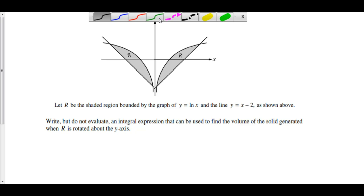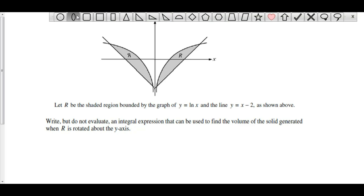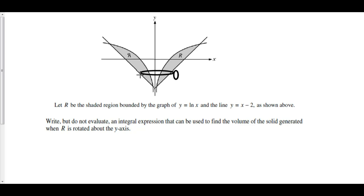We can construct our washers by first looking at the outside — the larger circle — which extends from here all the way inward to around here. So here is our larger circle. And our smaller circle extends from inside to inside right here. This is what creates our washers: here is the outside and here is the inside.